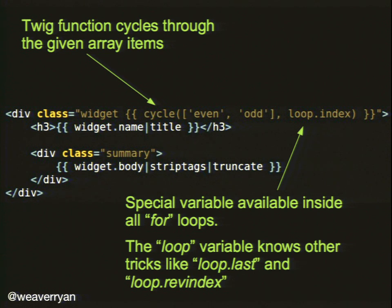The 'cycle' function lets you alternate between odd and even as you iterate — give it a number and it goes back and forth. The real takeaway is the loop variable. As soon as you're inside a 'for' loop, you get a 'loop' variable automatically. You can say loop.index — one, two, three, four — or loop.index0 for zero-based indexing. There's also loop.last, so you can say 'if loop.last, then print something.' No more manually tracking an index counter variable.